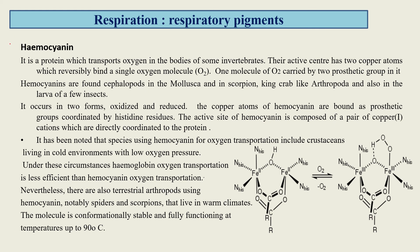The second respiratory pigment is hemocyanin, a protein which transports oxygen in the bodies of some invertebrates. Their active centers have two copper atoms which reversibly bind a single oxygen molecule, and one molecule of O2 is carried by two prosthetic groups. Hemocyanin is found in cephalopods (molluscs) and in arthropods like scorpions and king crabs, and also in the larvae of a few insects.